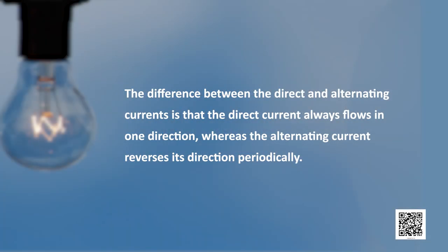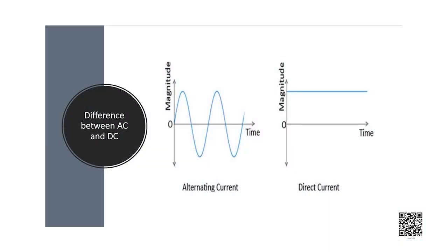The difference between direct and alternating currents is that the direct current always flows in one direction whereas the alternating current reverses its direction periodically. An important advantage of AC over DC is that electric power can be transmitted over long distances without much loss of energy.